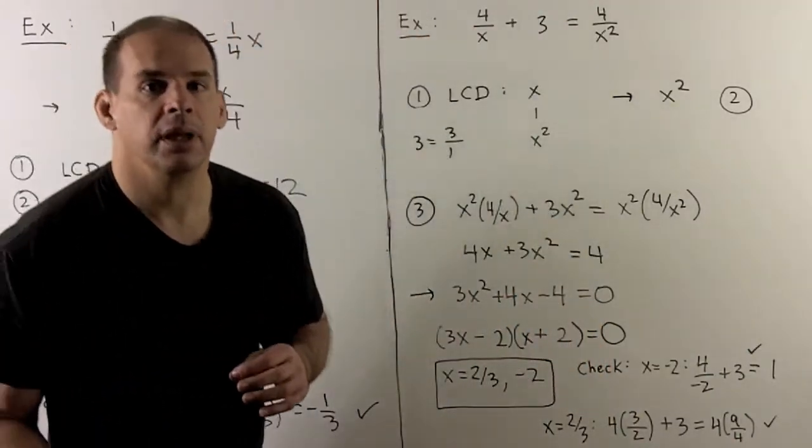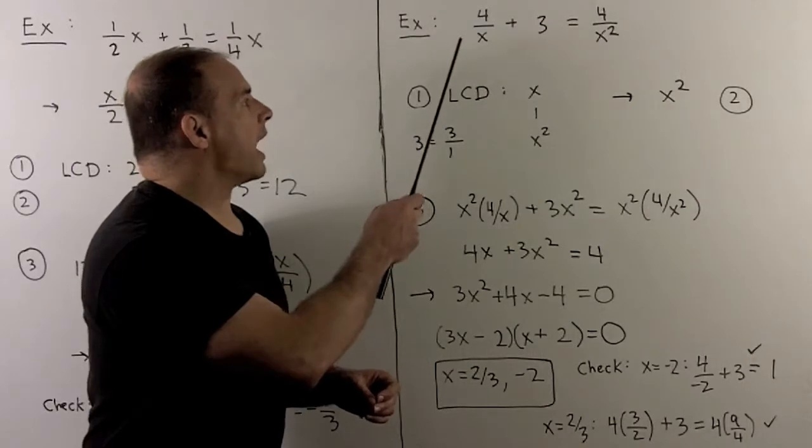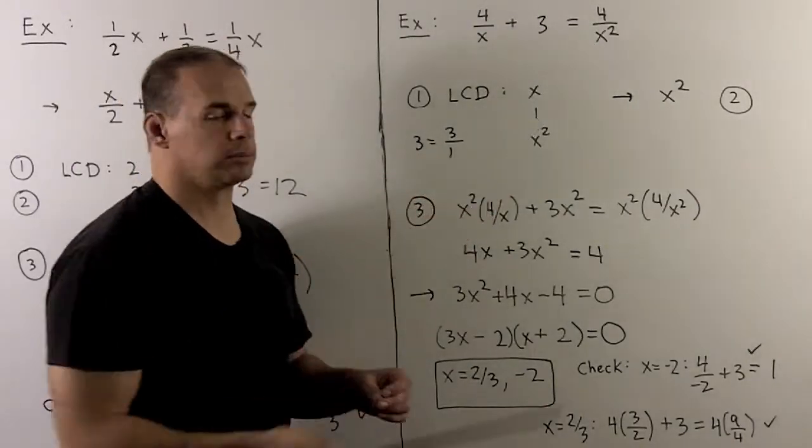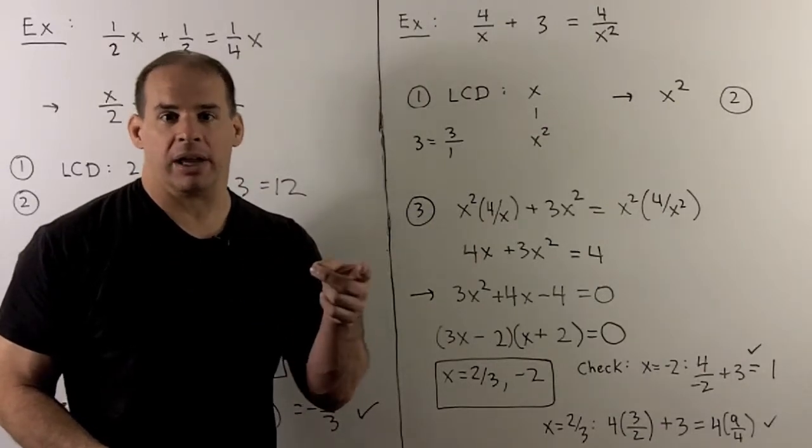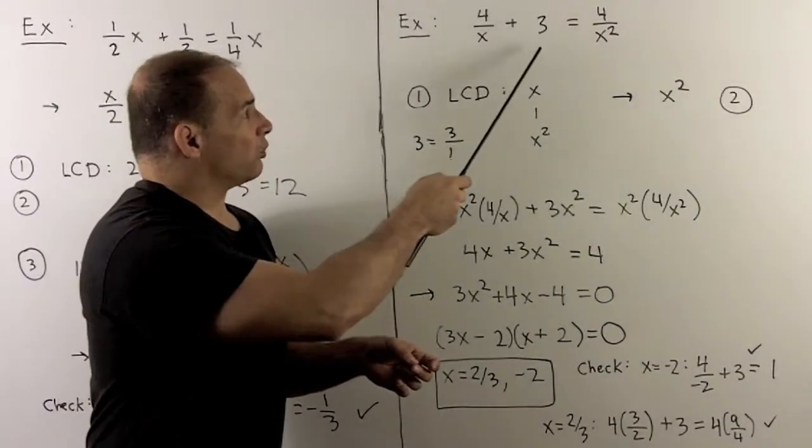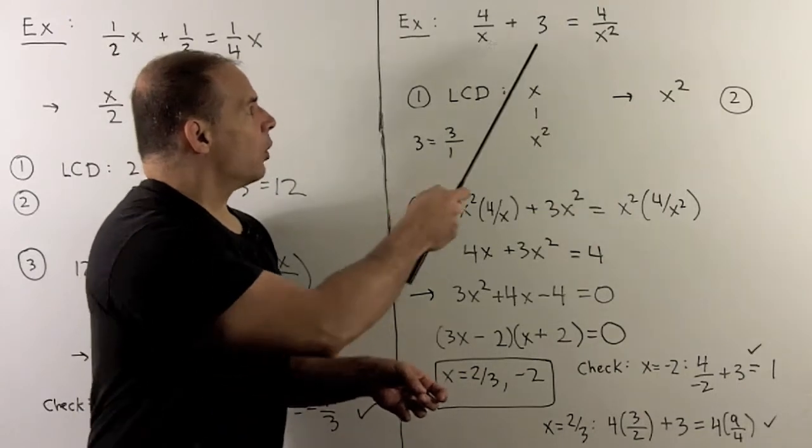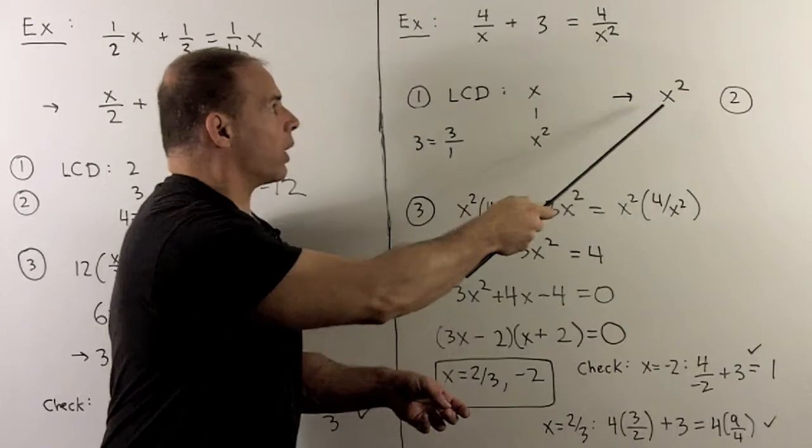Next step, let's put x in the denominator. I'll look at 4 over x plus 3 equal to 4 over x squared. There's nothing to factor in the denominator, so that's step one. We know that since I have a 3, I can rewrite that as 3 over 1 if I'm not sure what the denominator is. We have x, 1, and x squared.